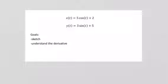To finish up here, we're going to do a little bit more with parametric curves and interpreting derivatives. Our first goal is to sketch this curve, and then we're going to understand what the derivative tells us about it. We have x = 5cos(t) + 2 and y = 3sin(t) + 5, so we need to try to picture what kind of curve this is going to form.